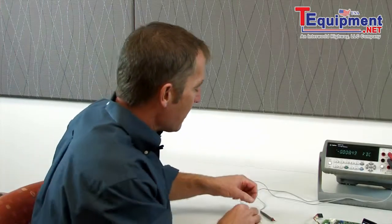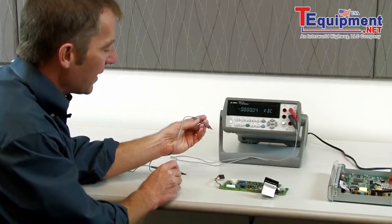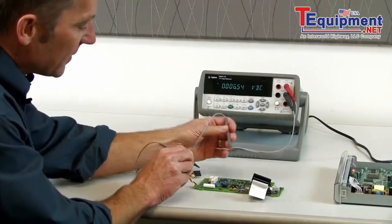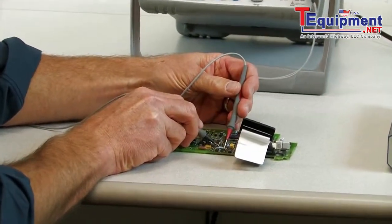First, you'll want to start with a high-quality set of probes. These are the 34133A probes. They're very small, so it's easy to probe on a very dense circuit board.